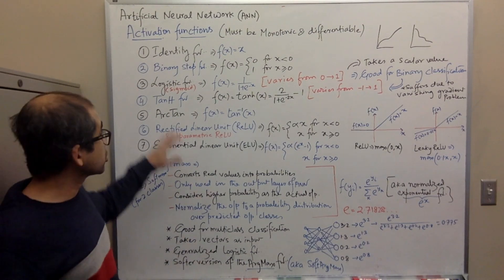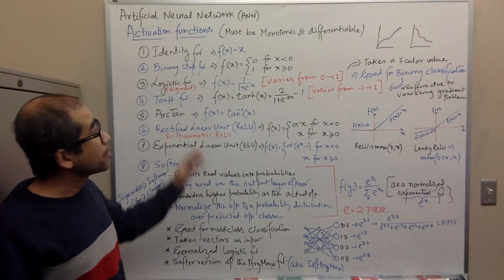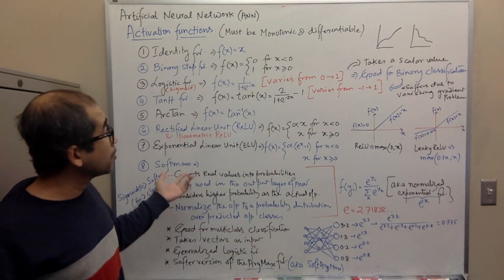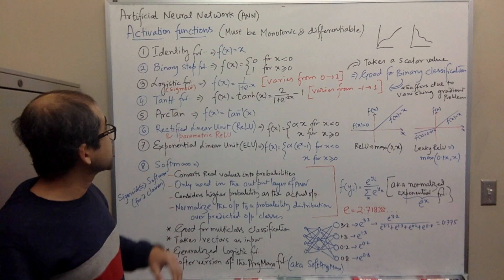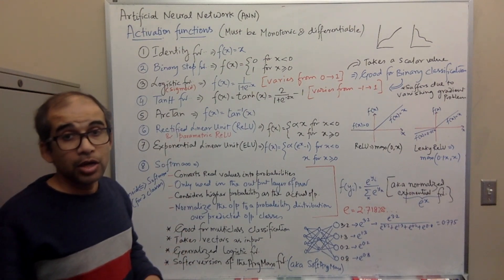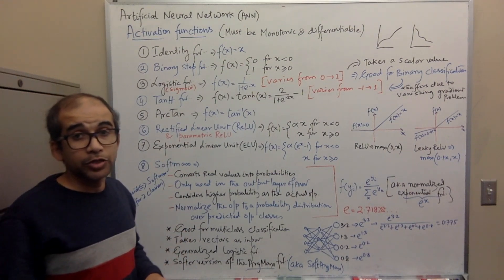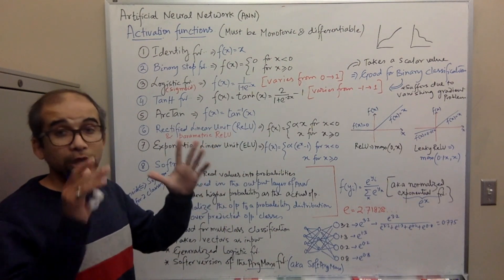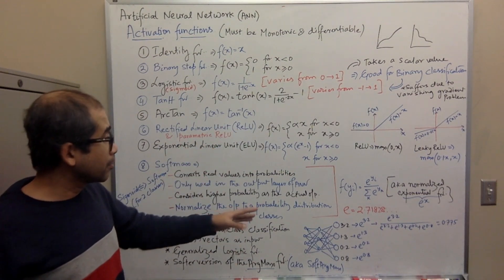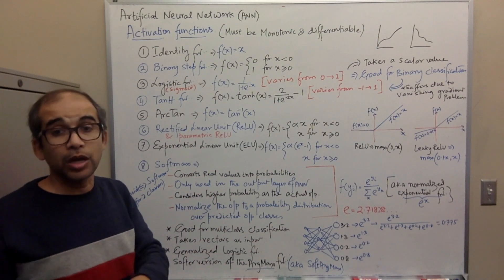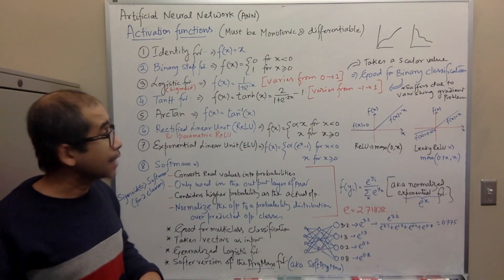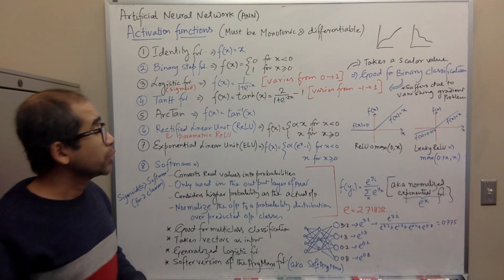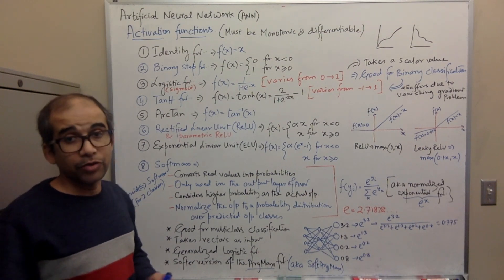To summarize: ReLU and Leaky ReLU are mostly used for the hidden layers of a neural network, while softmax is used for the output layer. Depending on the nature and necessity of the problem, other activation functions can be used as required.